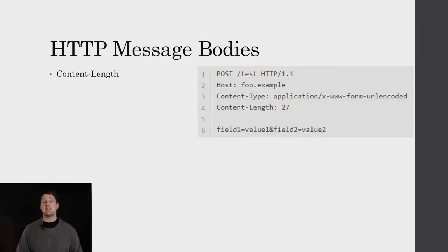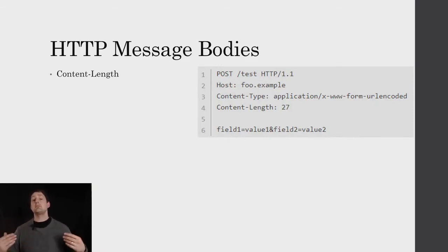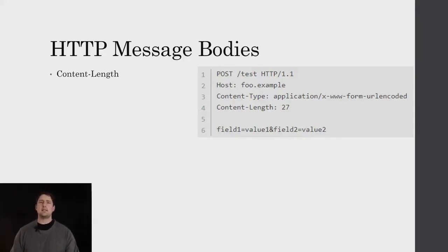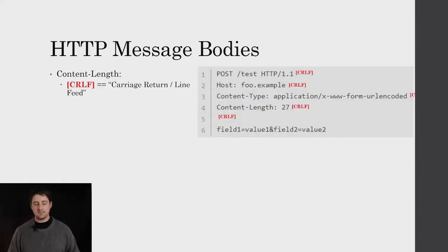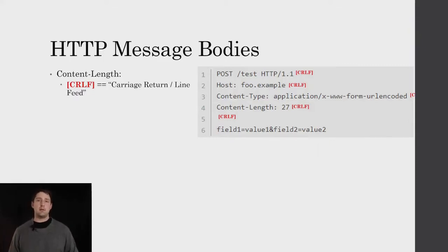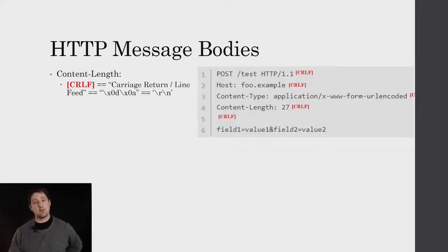One last concept about HTTP is message bodies. We talked about the first line — the verb, path, and version. We talked about headers as metadata. Now we have the bodies — how is data actually transferred? The easiest way to determine how large a payload or body is, is Content-Length. We have a POST request, and in the body you see key-value pairs. Something to remember in HTTP: each line is not separated by a single newline byte, but by two bytes — a carriage return and a line feed. This is going to be important later when we're counting bytes and seeing how this causes a mismatch.